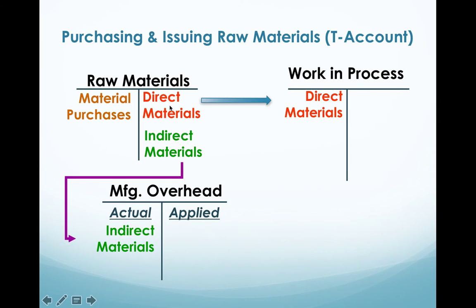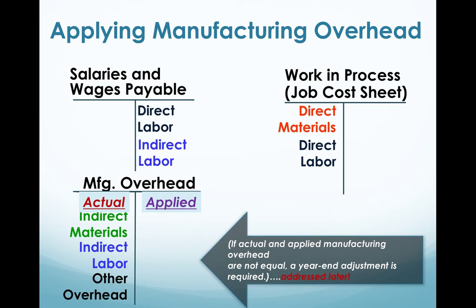Direct materials go directly into the work in process account, whereas indirect materials — screws, glue, and so on — go into manufacturing overhead. Same with wages: direct wages, like factory workers, go into the work in process account, whereas indirect labor goes into manufacturing overhead.